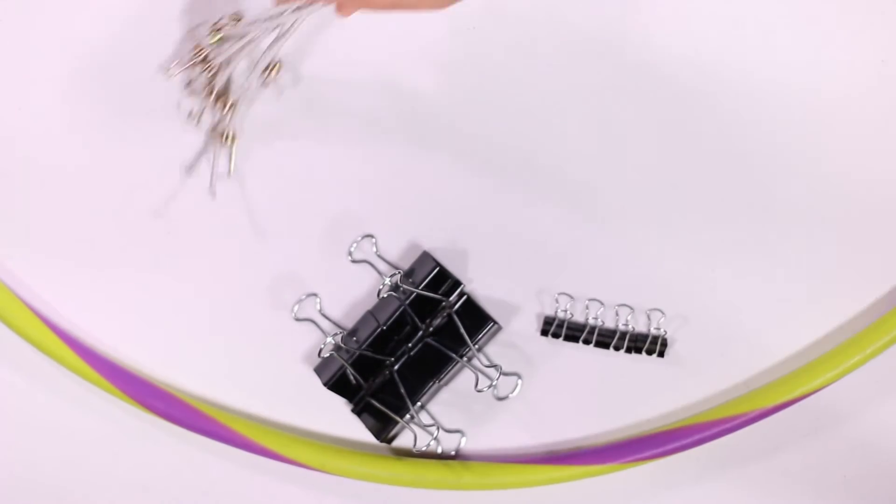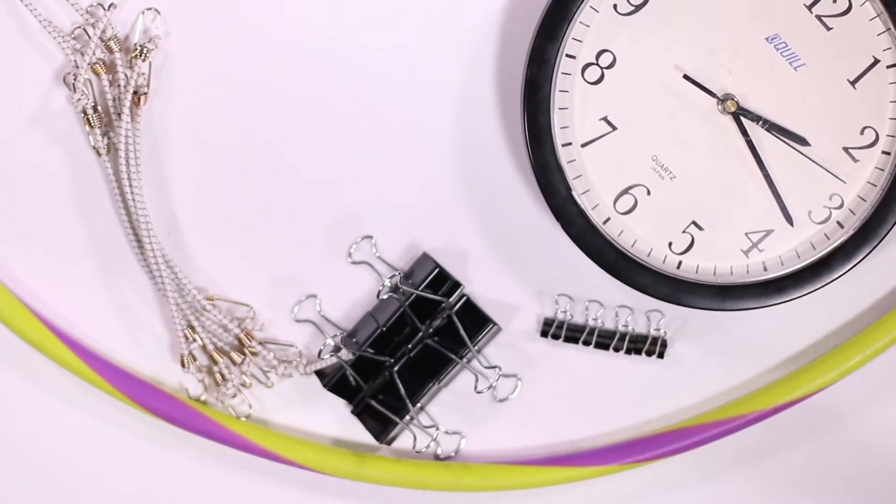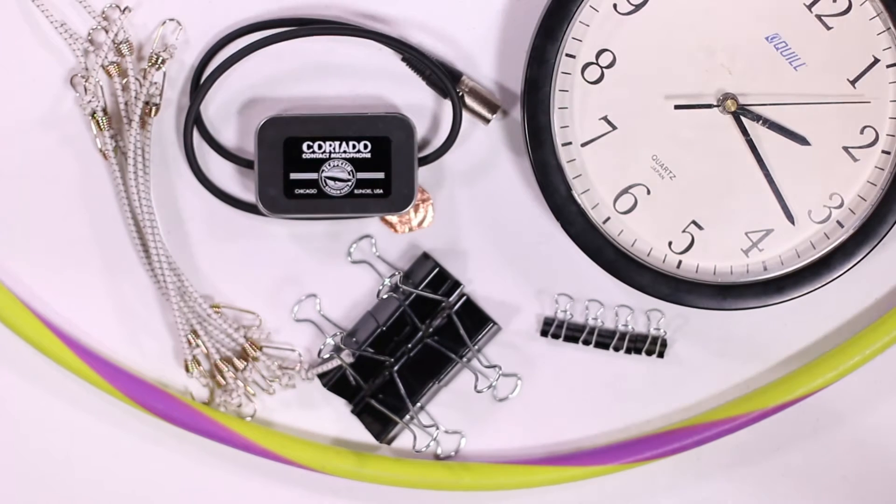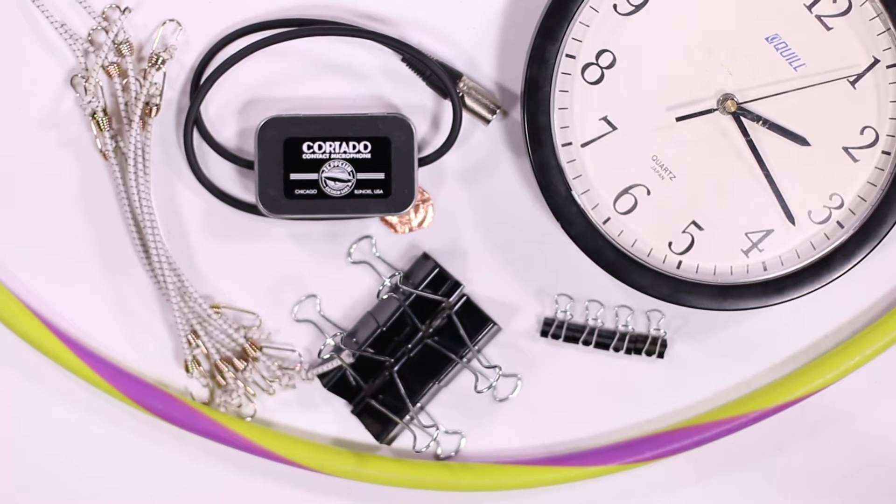All you need is a hula hoop, some large and small binder clips, eight mini bungee cords, a wall clock or some other piece of trash, and a contact microphone such as the Cortado by Zeppelin Design Labs.